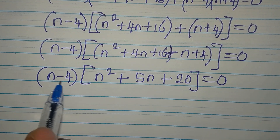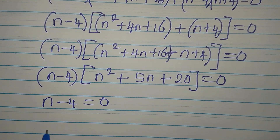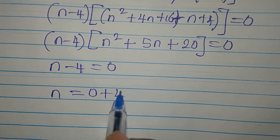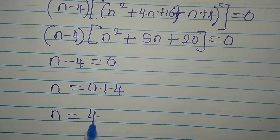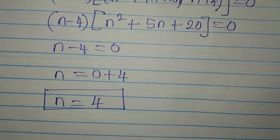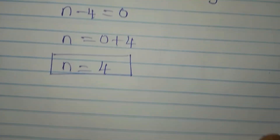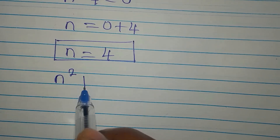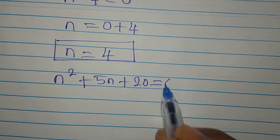Taking n minus 4 = 0 gives n = 4. This is one of the solutions. To get the other solutions, we take the quadratic expression n² + 5n + 20 = 0 and use the quadratic formula.